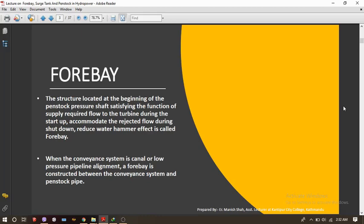When the conveyance system is canal or low pressure pipeline alignment, a forebay is constructed between the conveyance system and the penstock pipe as I have already told you.